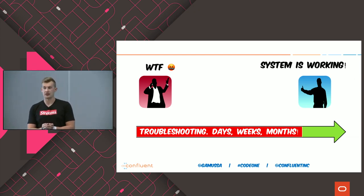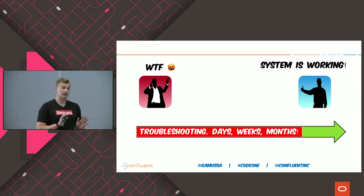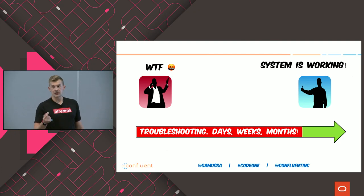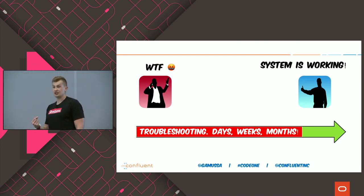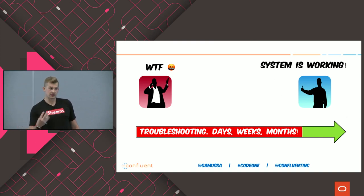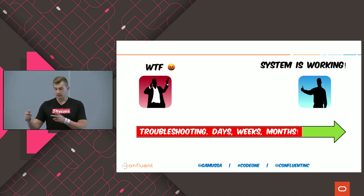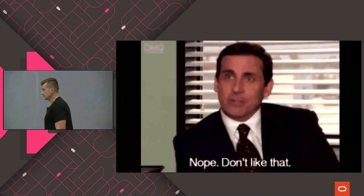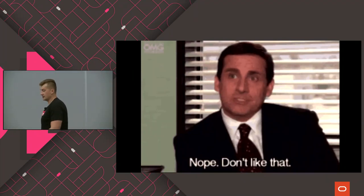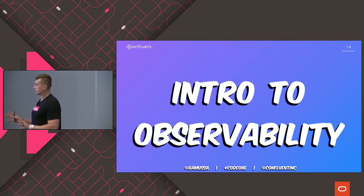What DevOps is actually teaching us is that it's not a blame game anymore. Things like deploy often — every commit, every push — teaches you that changes are not supposed to be scary. With the proper culture of delivering things and the proper culture of monitoring — and we will return to monitoring and observability and how they connect — changes are not scary anymore. This situation of war rooms is not cool, so let's go to the subject of observability.